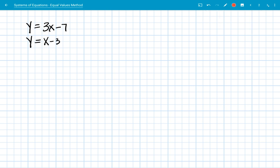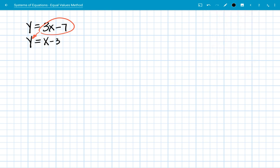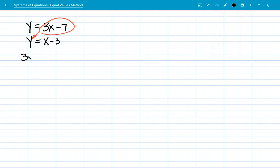And again, since those quantities both equal y, I can set them equal to each other. And that gets me this equation that 3x minus 7 equals x minus 3.